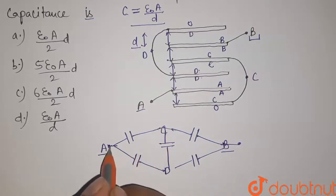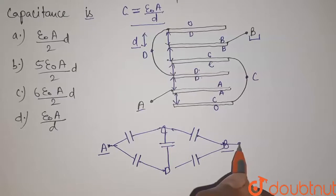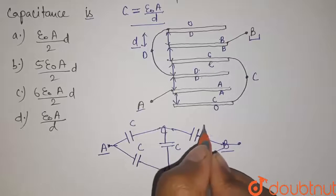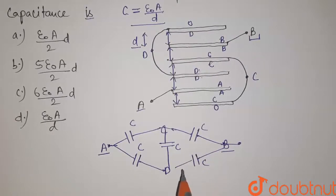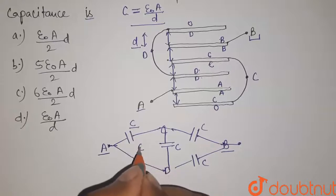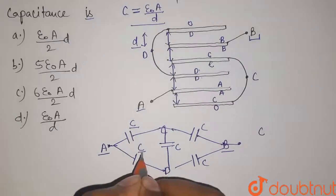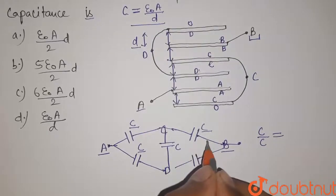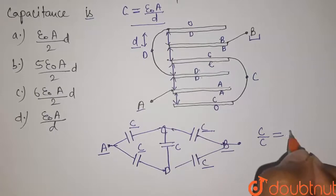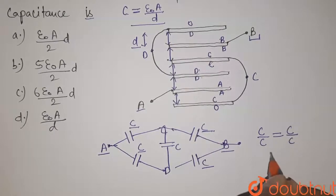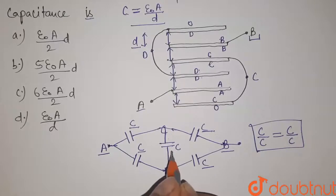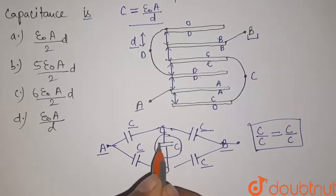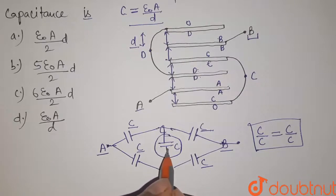We have to find the equivalent capacitance between A and B. Each capacitance is C. The ratio of this capacitance to this capacitance is C to C, and the ratio between this capacitance and this capacitance is also C to C. That means it is forming a Wheatstone bridge. In a Wheatstone bridge, this middle capacitance does not contribute to the equivalent capacitance.